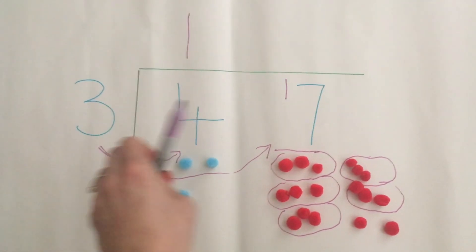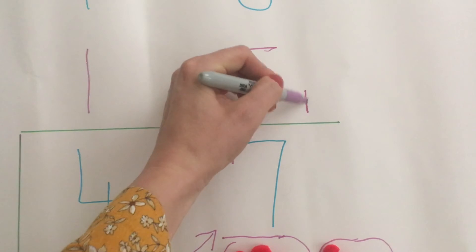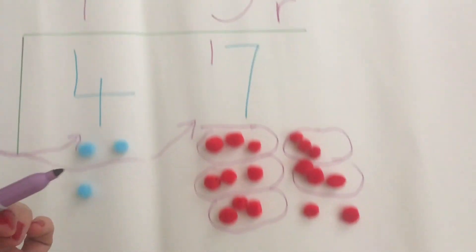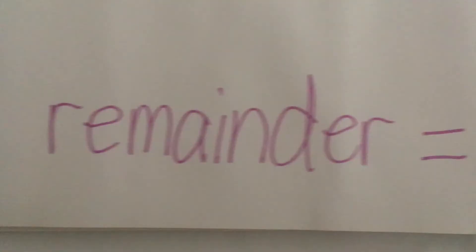So at the top, I'm going to write 5 above my 17 and R to represent remainder and 2 after the R because I have 2 remaining.